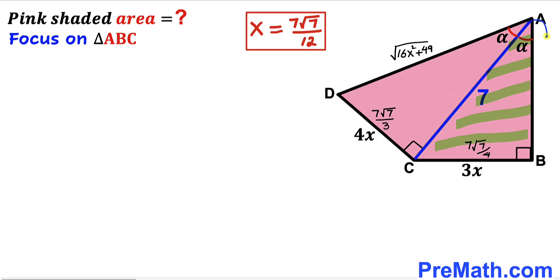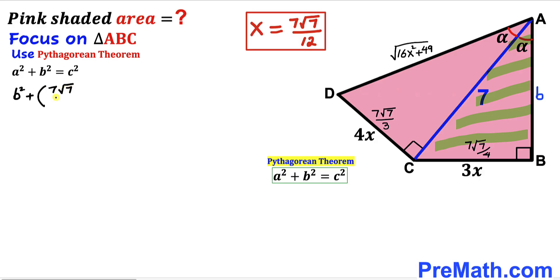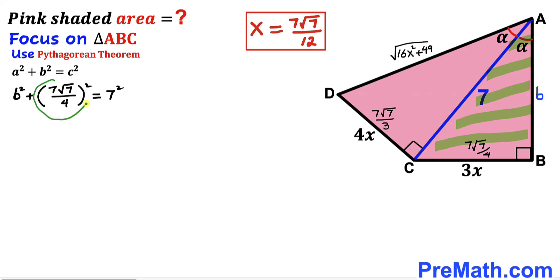Now let's focus on this other right triangle ABC. I'm going to label this side AB as lowercase b, and we are going to apply the Pythagorean theorem on this triangle as well. Here's our Pythagorean theorem: a² + b² = c². In our case the hypotenuse is 7, and our two other legs are lowercase b and 7√7/4. Filling in the formula, we get b² + (7√7/4)² = 7², and (7√7/4)² equals 343/16.